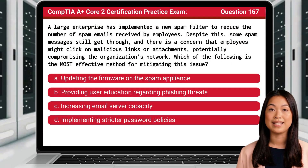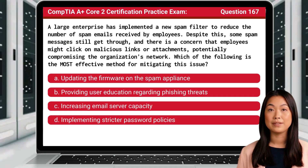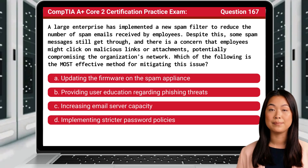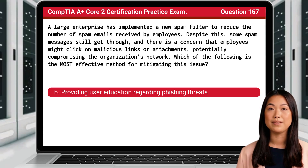Question 167. A large enterprise has implemented a new spam filter to reduce the number of spam emails received by employees. Despite this, some spam messages still get through, and there is a concern that employees might click on malicious links or attachments, potentially compromising the organization's network. Which of the following is the most effective method for mitigating this issue? The answer is B: Providing user education regarding phishing threats.